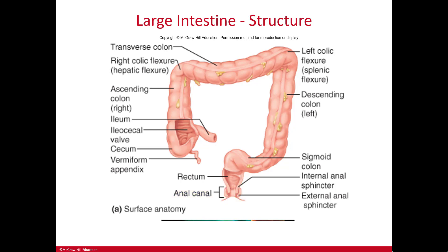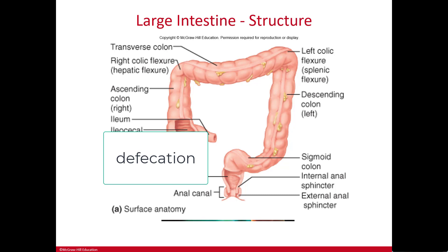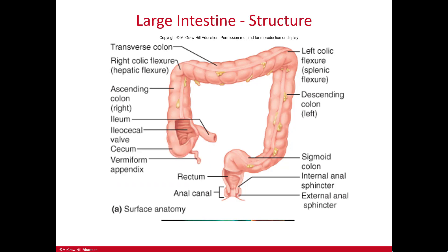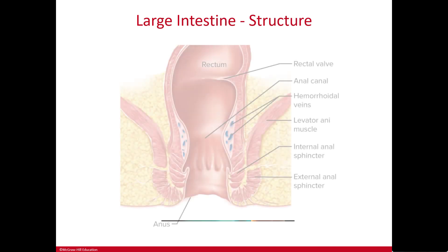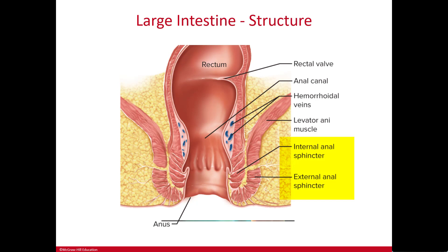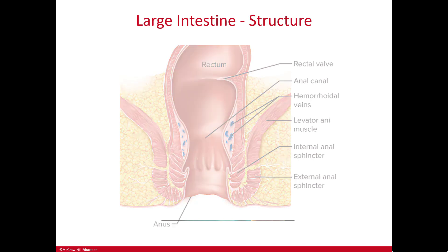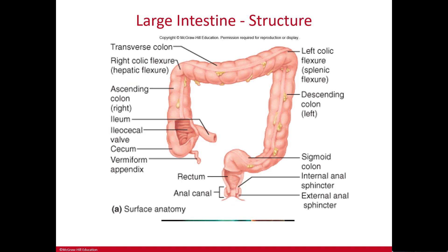Within the anus, the mucous membrane is folded into six to eight longitudinal anal columns. Pressure of feces against those columns causes secretion of mucus, providing lubrication during defecation — the professional term for pooping. There are two sphincter muscles in the anus: an internal sphincter, which is involuntary, and an external sphincter, which is voluntary. Potty training is all about gaining voluntary control over that external sphincter muscle.